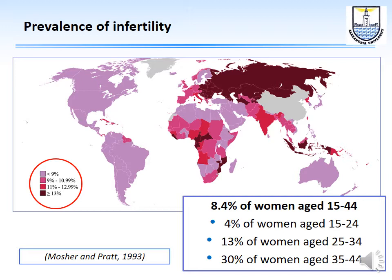The prevalence differs by age group: for young women aged 15–24, infertility is about 4%; for women aged 25–34, about 30%; and for women above 35 — say between 35 and 44 — infertility accounts for about 30% of cases.